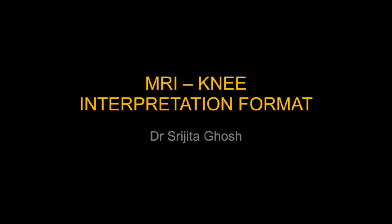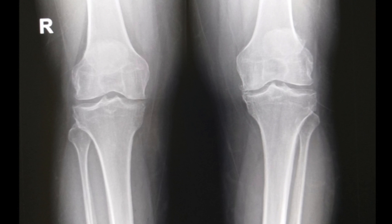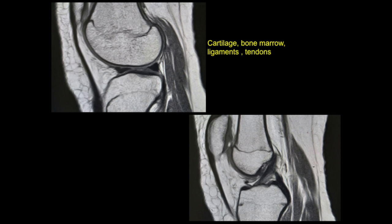Plain radiograph does not give us a clear idea about what is happening inside the knee joint, and MRI reveals certain details like bone marrow, articular cartilage, menisci, tendons, ligaments, soft tissue, and muscles in much greater detail.